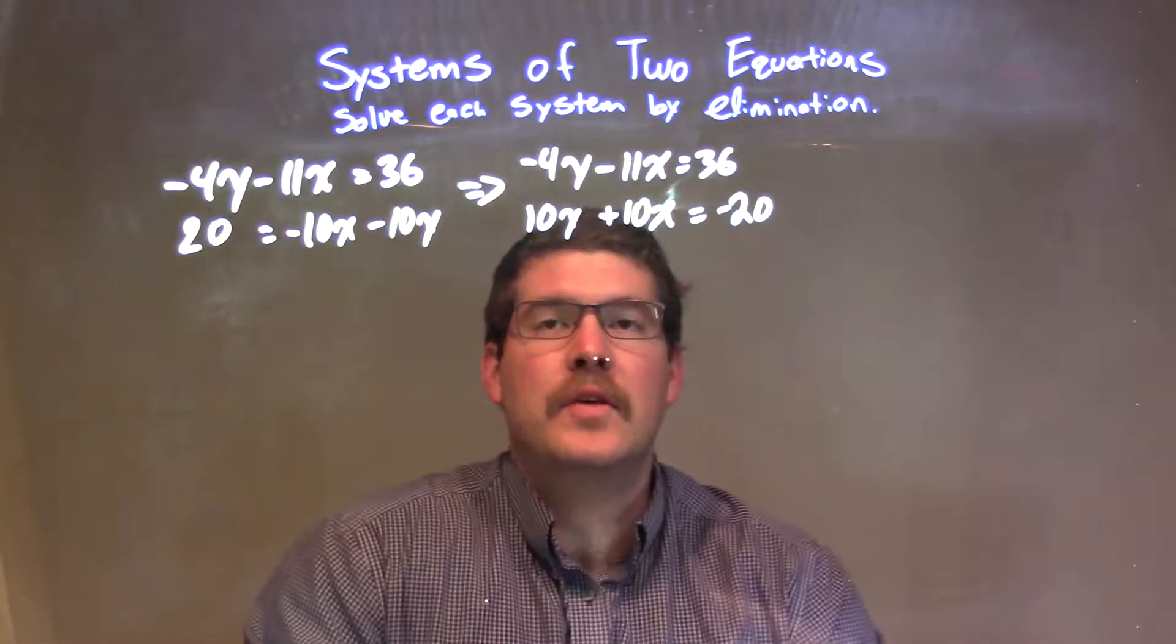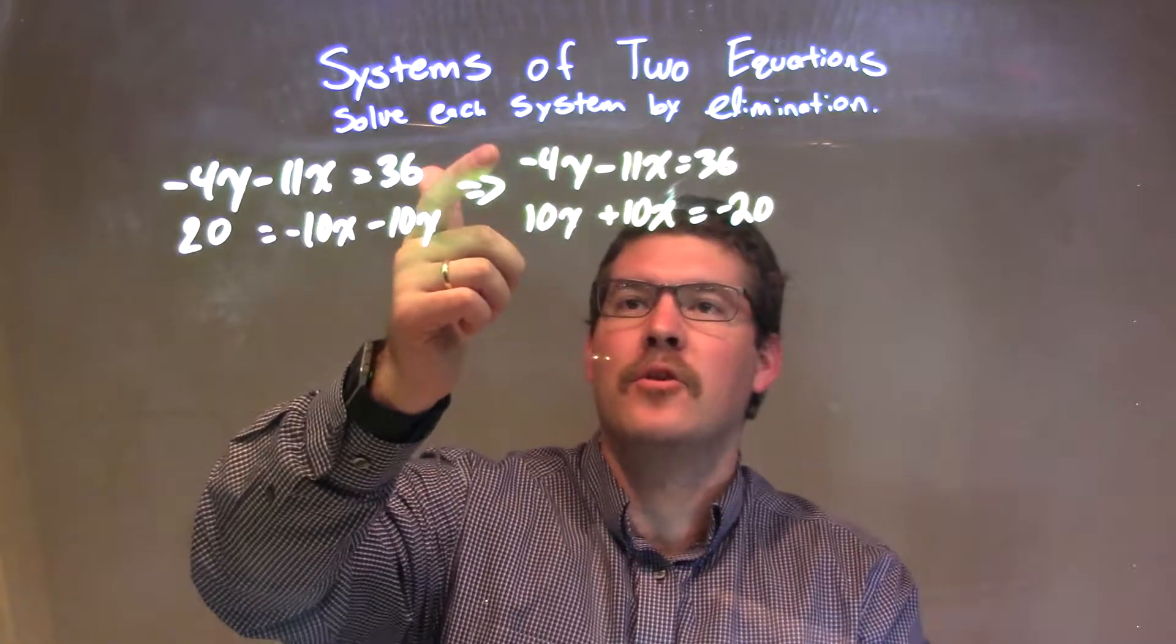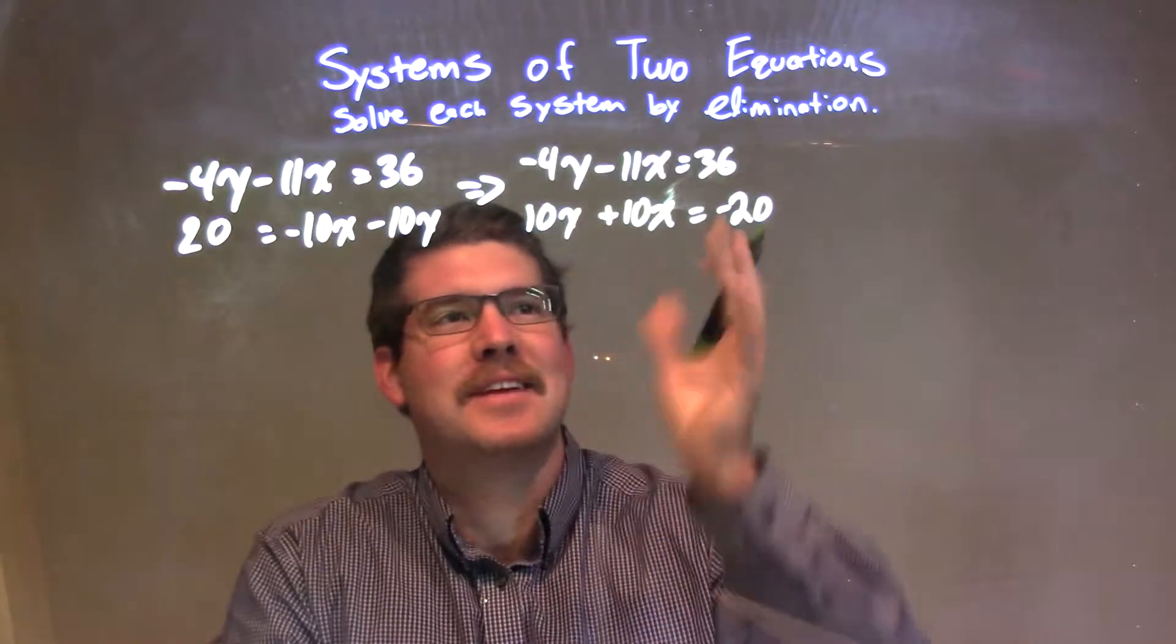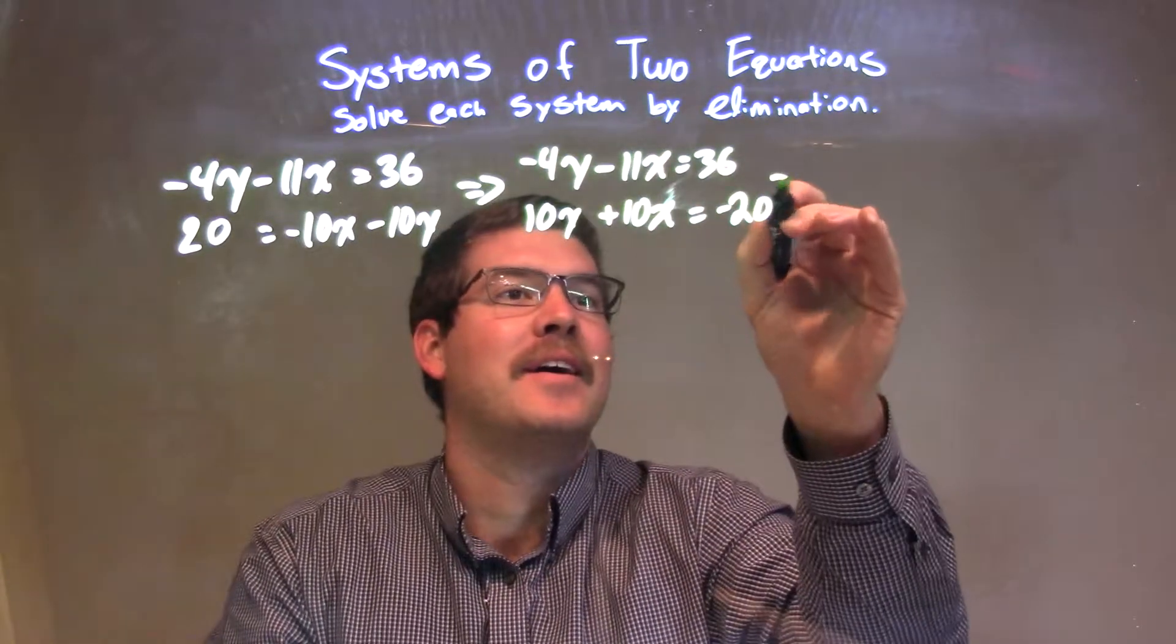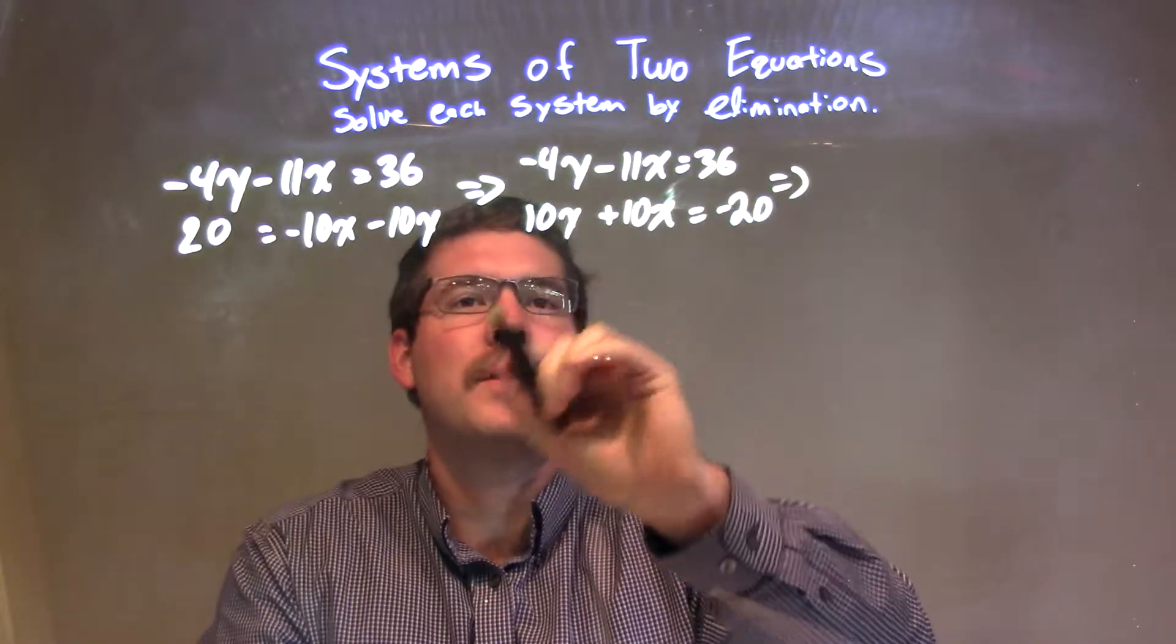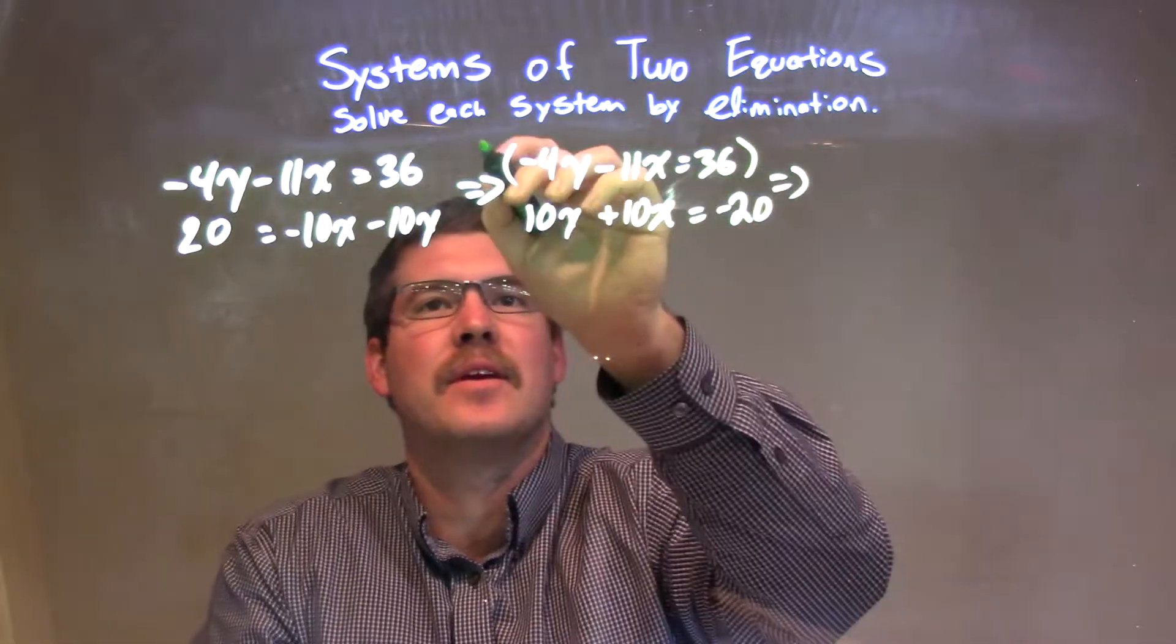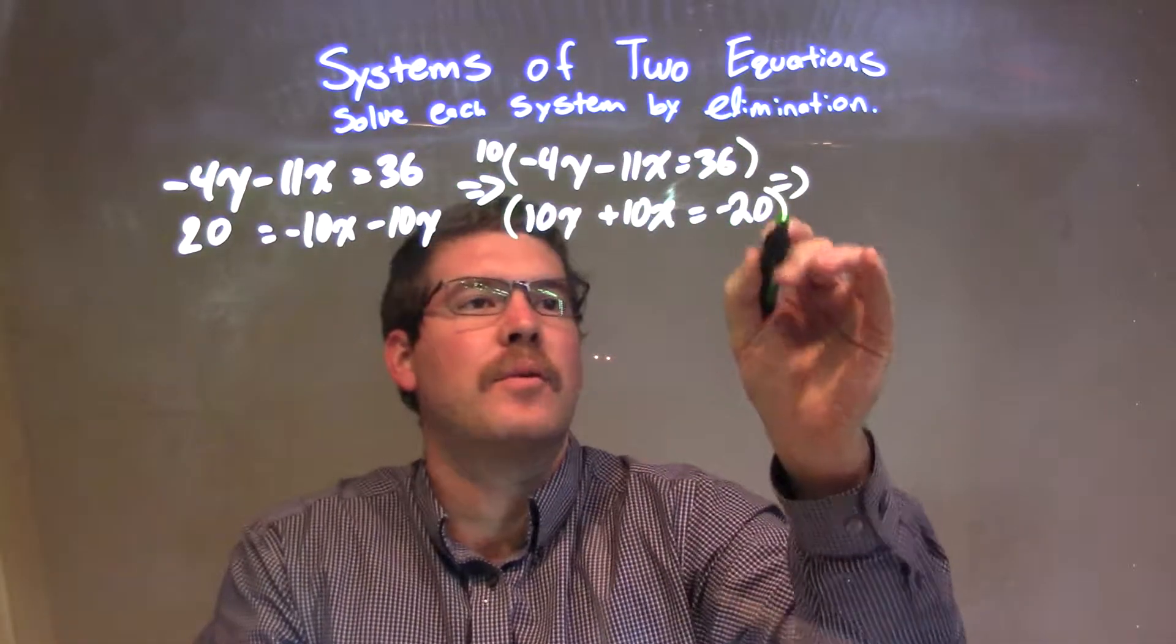What I want to do now is see, what can I do to multiply the top and the bottom? I'm going to multiply the whole top equation by 10, and the bottom equation by 4.